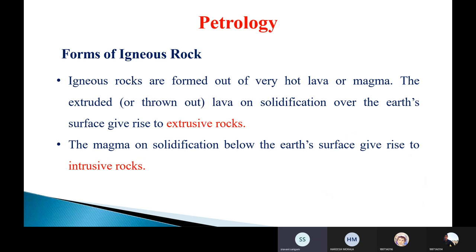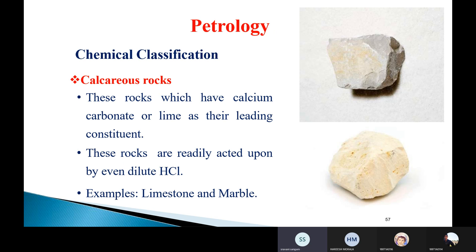Up to here, the classification of rocks is completed. The three classifications are: first, geological classification; second, physical classification; and third, chemical classification. From an exam point of view, when asked to explain the classification of rocks, you should write about all three — geological, physical, and chemical — along with their examples.